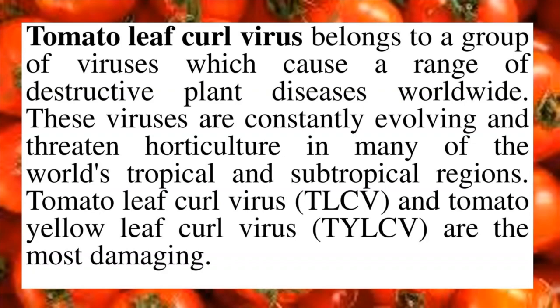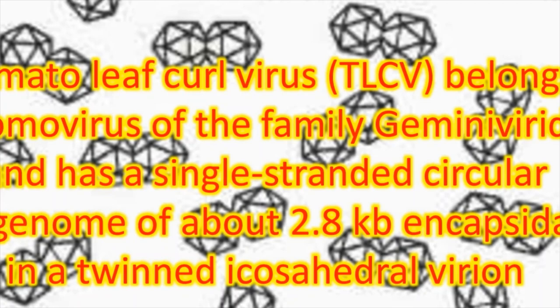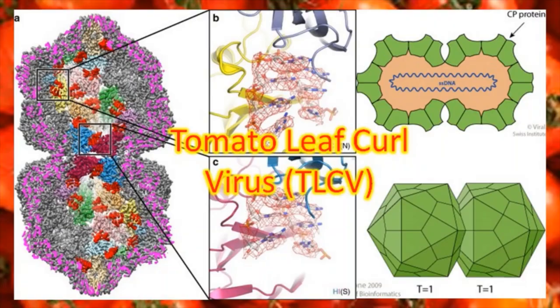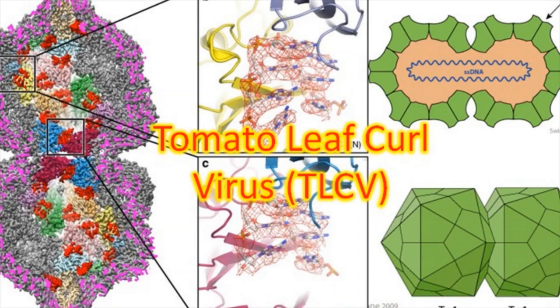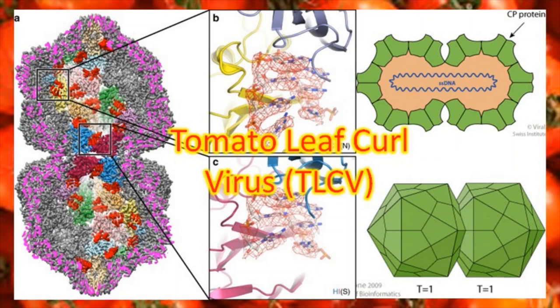Tomato leaf curl virus belongs to the Begomovirus genus of the family Geminiviridae. It has a single-stranded circular DNA genome which is about 2.8 kb, encapsulated within a twinned icosahedral virion or viral particle. So it is a protein coat which is icosahedral, within which about 2.8 kb of single-stranded DNA genome is present — that is the genome of this virus, TLCV, belonging to the family Geminiviridae.